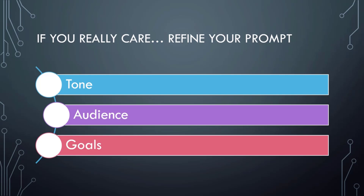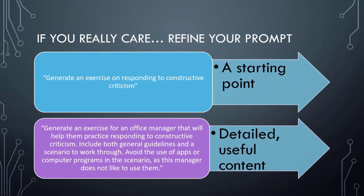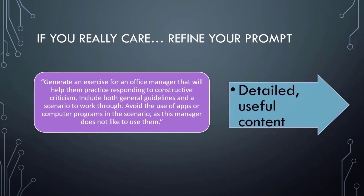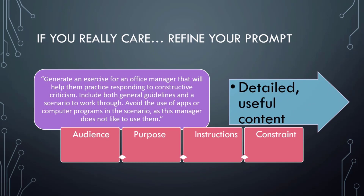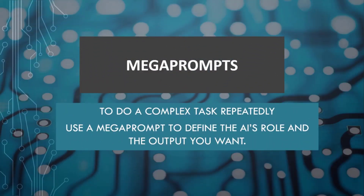Tell it exactly what you want it to achieve. For example, I could tell ChatGPT to generate an exercise on responding to constructive criticism and get a response — however, I would get a more useful response with the prompt: generate an exercise for an office manager that will help them practice responding to constructive criticism, include both general guidelines and a scenario to work through, and avoid the use of apps or computer programs in the scenario as this manager does not like to use them. The revised prompt gives an audience, a purpose, instructions on what types of content to include, and a constraint, delivering a more detailed and useful response.